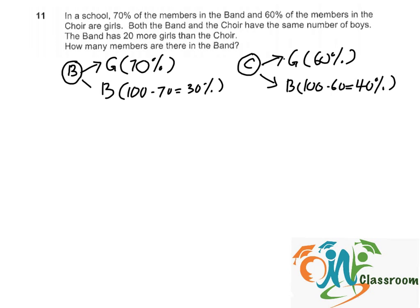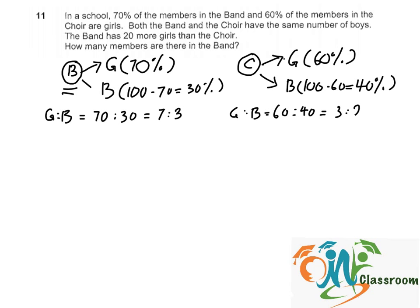We can represent this with a model. For the band, the girls to boys ratio is 70 is to 30, which gives us 7 is to 3. And for the choir, the girls to boys ratio is 60 is to 40, which gives us 3 is to 2.